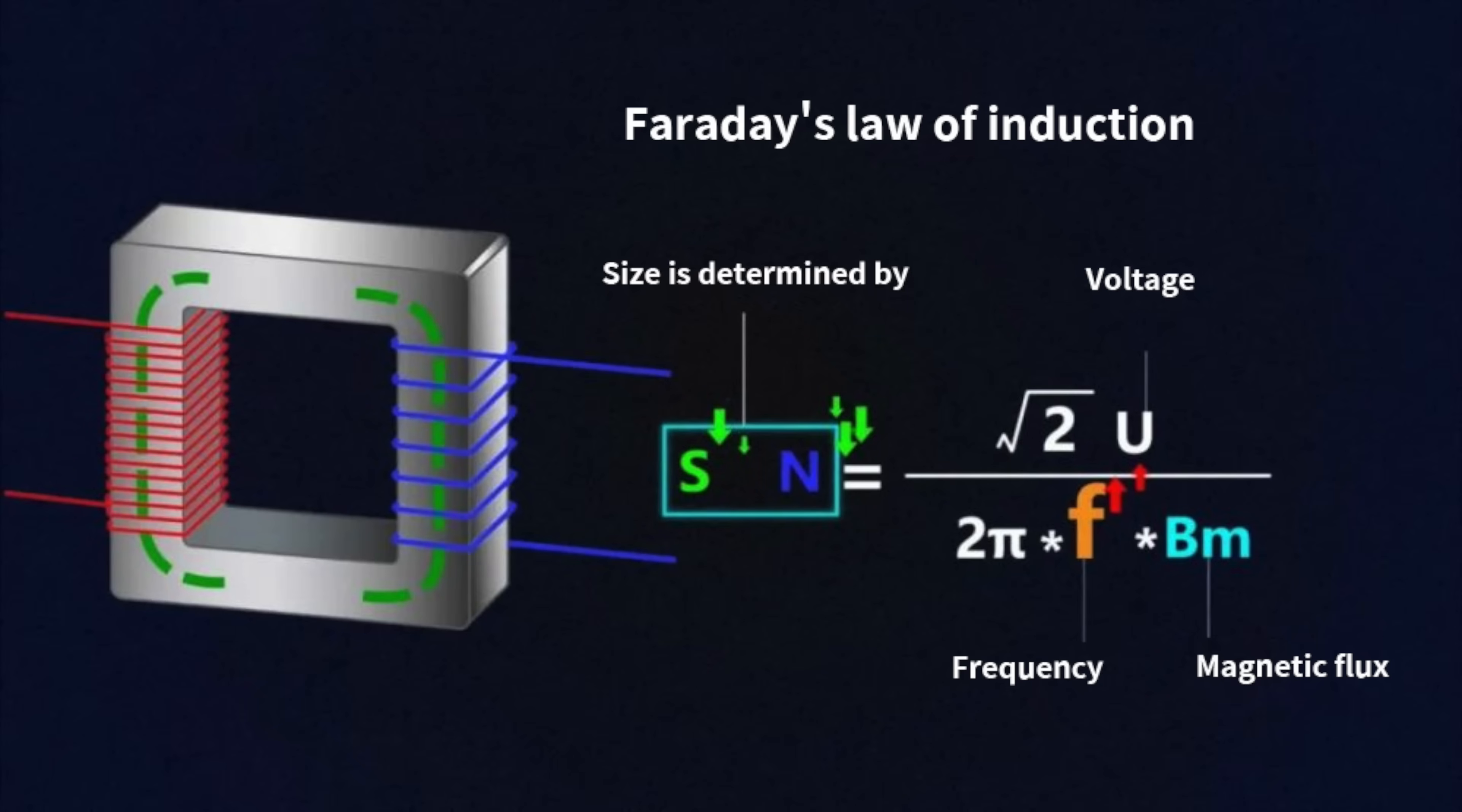And switch transistors can control the frequency. In the process of continuous switching, the GAN switch transistor can reach higher frequencies than the silicon transistor. The loss is lower and the heat dissipation efficiency is higher. So the charger and transformer can be smaller than before.